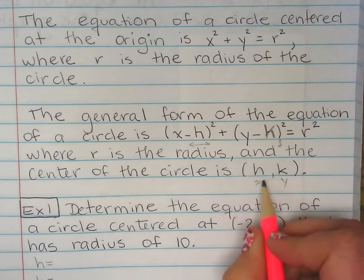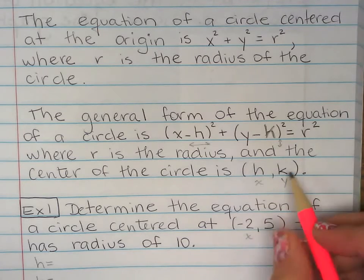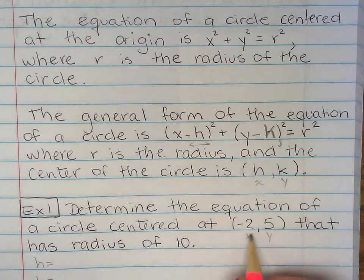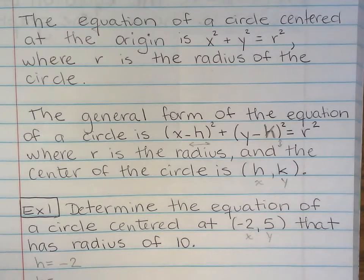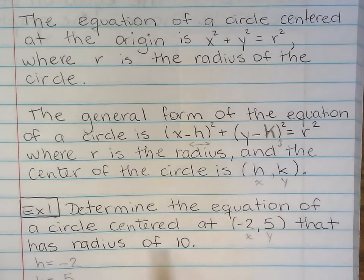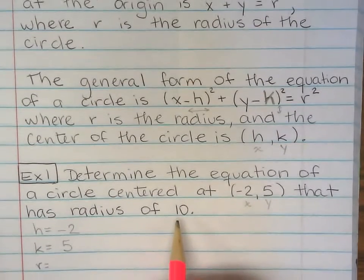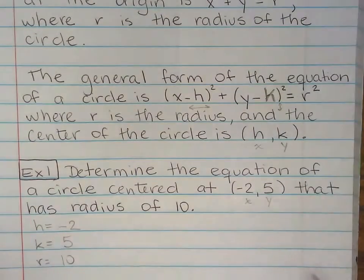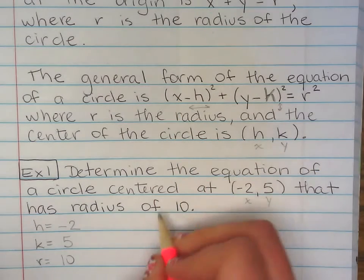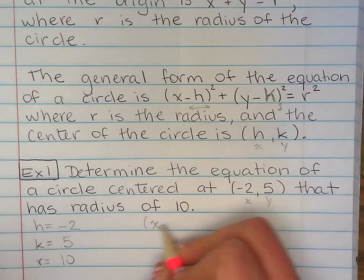Like I said right here, h will go with the x, k will go with the y. So h right here is -2, k is right here with the 5. And the radius is given, so r is 10. So we have our formula right here. Before I start doing anything, I want to copy the general formula.